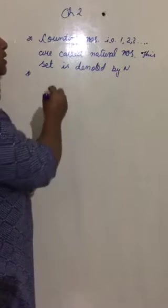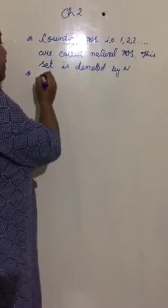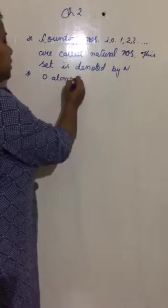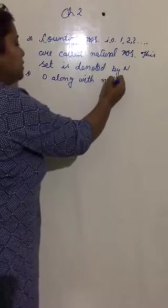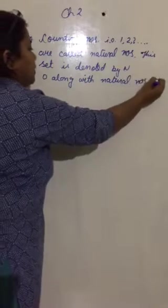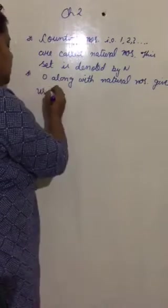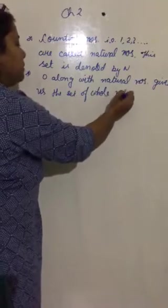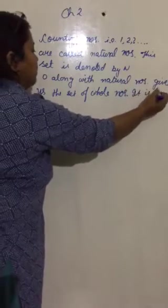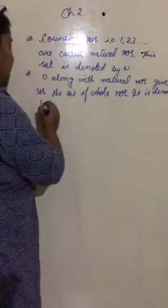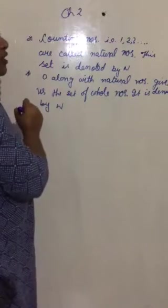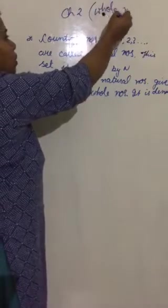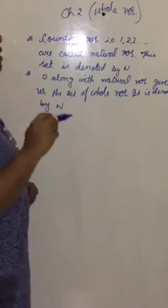So, the set of natural numbers along with 0 together give us whole numbers. 0 along with natural numbers gives us the set of whole numbers. And how do we denote this set of numbers? It is denoted by the capital alphabet W. So, what chapter are we doing, students? You must have understood now. We are going to do the chapter whole numbers. And this note, you need to write it down in your notebook.